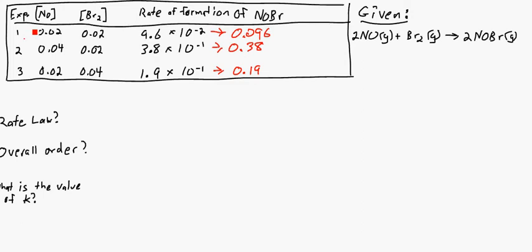So looking at experiment 1 versus experiment 2, you double NO, you quadruple your rate of formation of NOBr. So NO is really important in this reaction here. And for the third experiment here, what they did is they doubled Br2. They went back to the original value for NO, so 0.02, you double Br2. And what happens? You get a different value. In this case, you're actually doubling your rate.